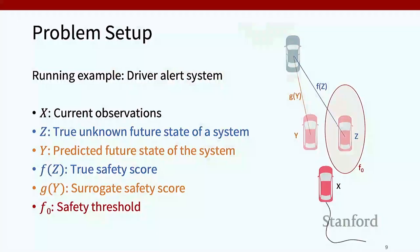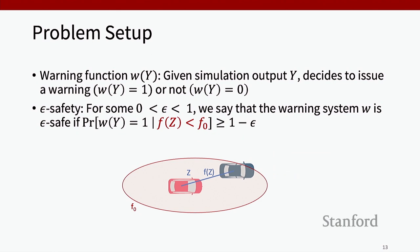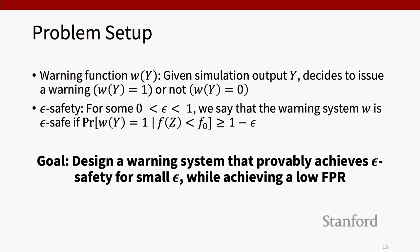What we'd like to do is design a warning function such that given a simulator output Y, our warning system either decides to issue a warning or not. We'd like our warning system to satisfy epsilon safety, which means that if F of Z is less than F-naught — so if these cars will be too close together — then we'll issue a warning with at least 1 minus epsilon probability. The goal is to design a warning system that provably achieves epsilon safety for small epsilon while achieving a low false positive rate. The main difficulty is that the warning function can only depend on the simulated feature Y rather than the true future Z, which is not yet observed when the warning is issued, and your simulator might not come with any performance guarantees.